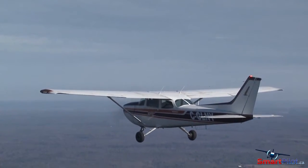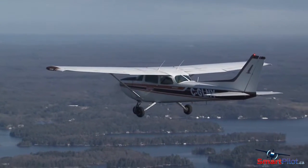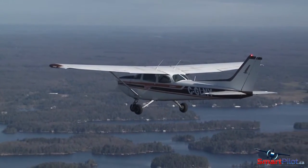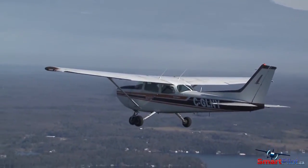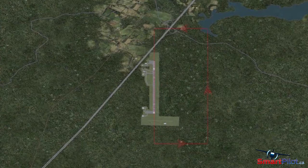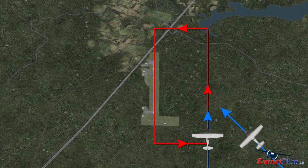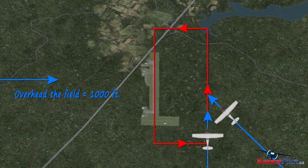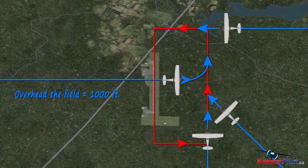Remember to keep your transmissions brief by using as much shorthand as possible. The MF operator will then either confirm your intentions or suggest alternative circuit entry options, depending on any other aircraft they may be talking to. You might be asked to consider one of several different options available to your circuit entry at an MF airdrome, including a straight-in on the downwind leg, a 45-degree entry to downwind, overhead the field at a thousand feet above ground level joining mid-downwind, straight-in on the base leg, or if the situation allows, straight-in on final.